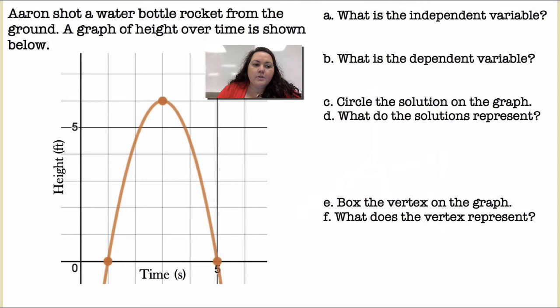Alright, our first problem. It says, Aaron shot a water bottle rocket from the ground. The graph of height over time is shown below. So I have the rocket. It's going higher, higher, higher, times passing. Then it starts coming down.